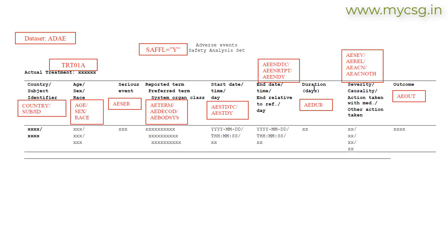For the duration in terms of days column, we are asked to use values from AEDUR. The next column captures information related to severity of the adverse event, causality, action taken with the medication, and other action taken. For these four pieces of information we are asked to use the values from AESEV, AEREL, AESCN, and AESCNOTH variables. Finally, for the outcome variable we are asked to use the variable AEOUT.